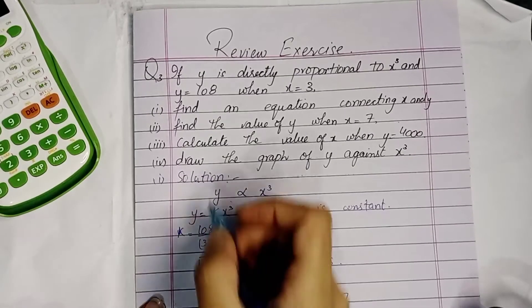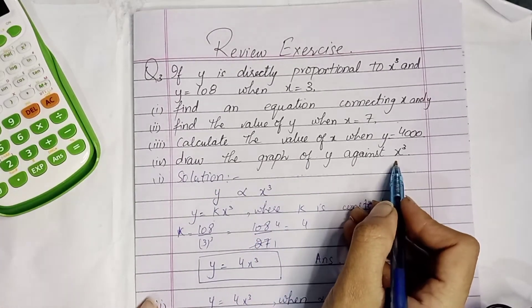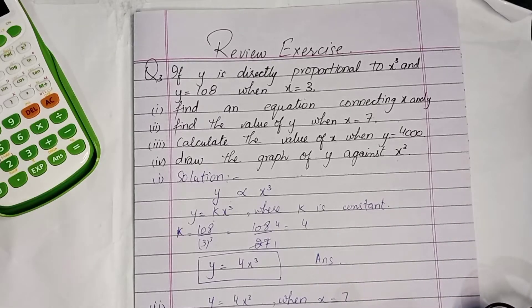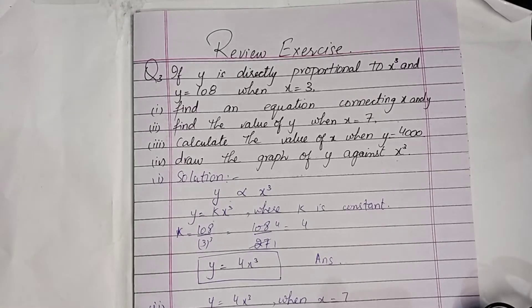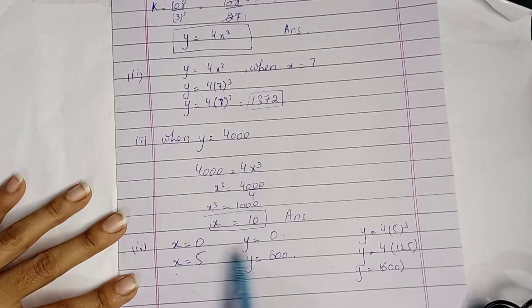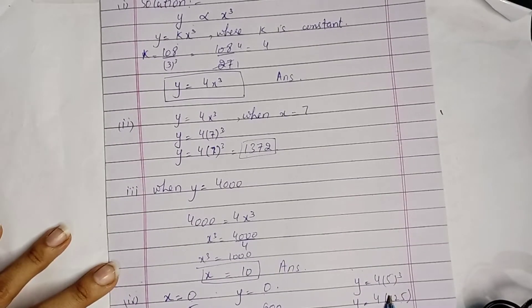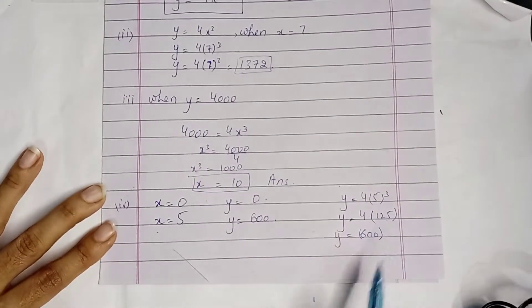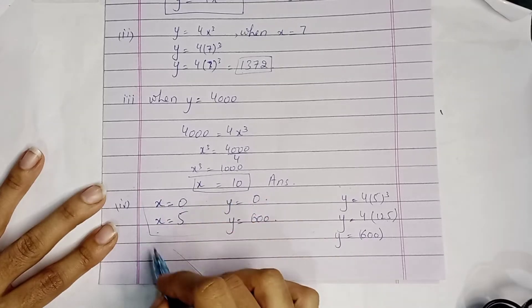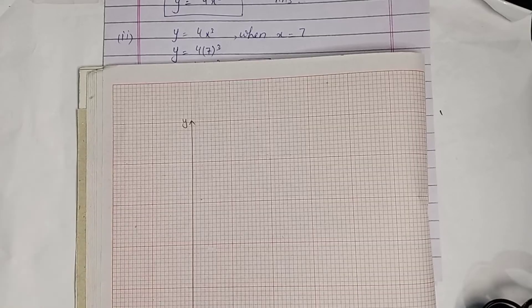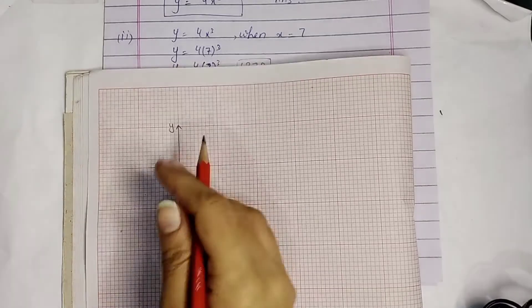Now part number 4: draw a graph of y against x cubed. We have to draw the graph of y against x cubed. We will write down two values in a table: x values 0 and 5, and using the equation y equals 4x cubed, y will have values 0 and 600.